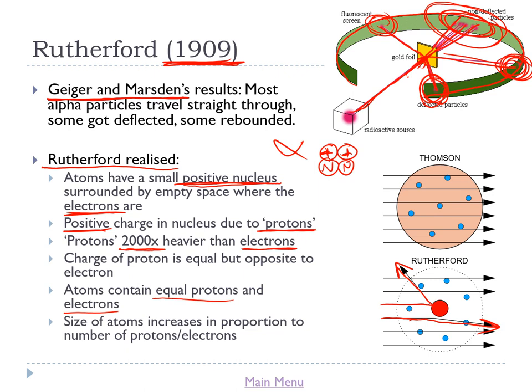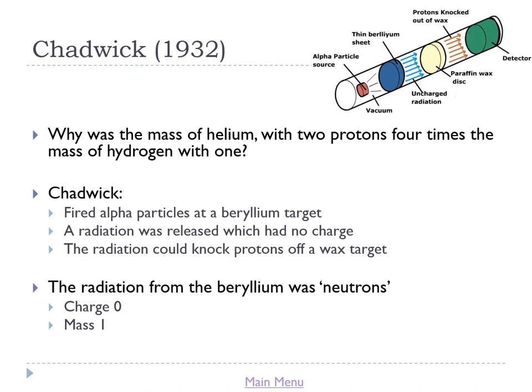Rutherford also reasoned that as atomic size increases, the number of protons increases in proportion to mass — but this was wrong, and it led to the discoveries of James Chadwick. The problem: helium has a mass four times that of hydrogen, so according to Rutherford its charge should also be four times that of hydrogen, but helium's charge is only twice that of hydrogen. This didn't make sense under Rutherford's model, so Chadwick did experiments to explain it.